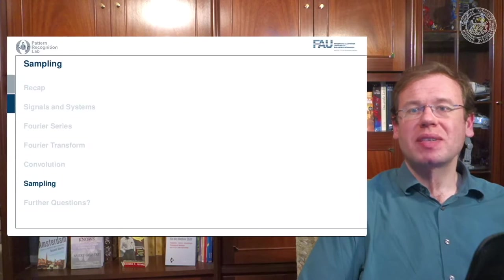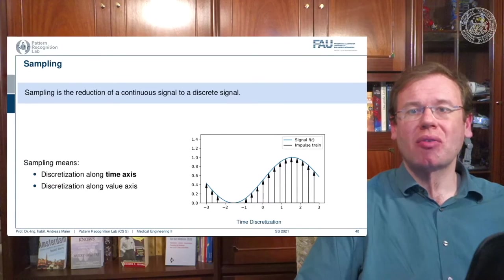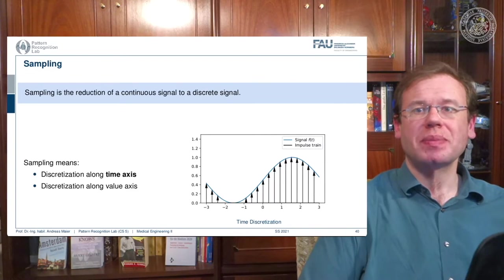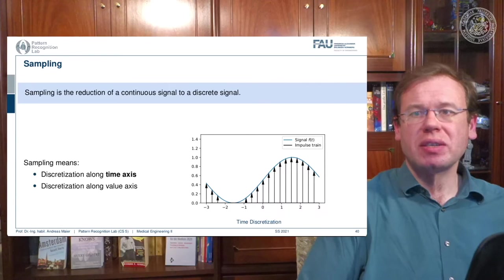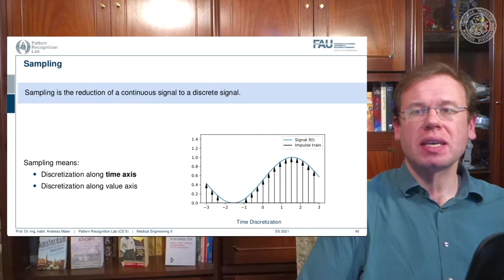Here we go with sampling. And sampling is the process of getting a signal essentially into a digital computer. So sampling is the reduction of a continuous signal onto a discrete signal. And we want to do it in a way that we don't lose any information.